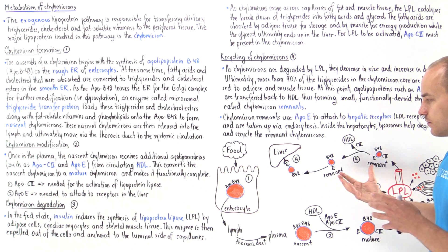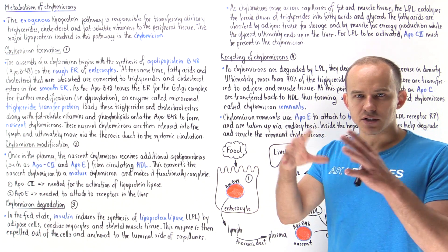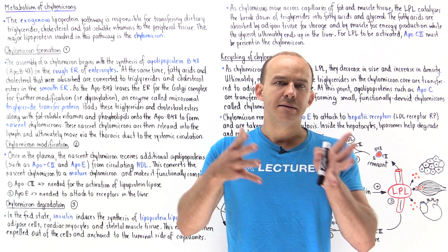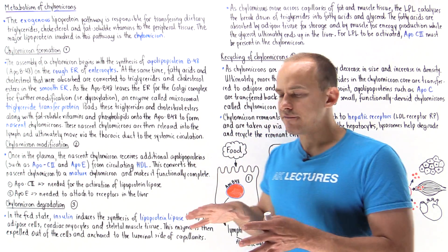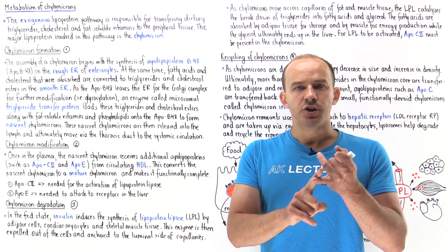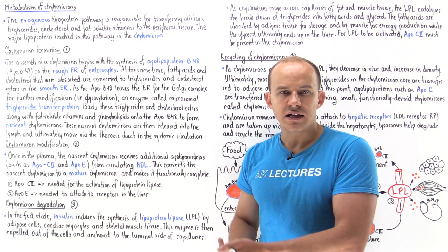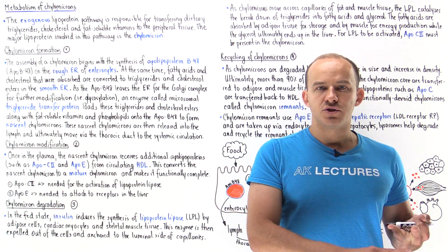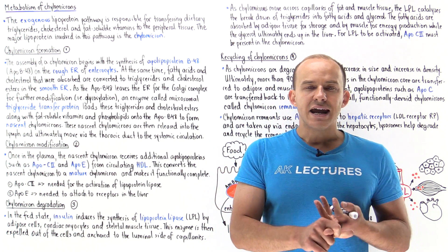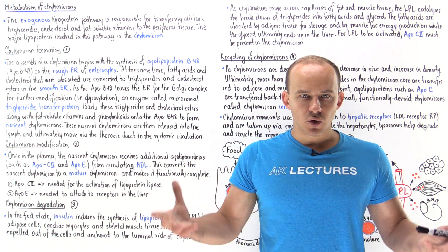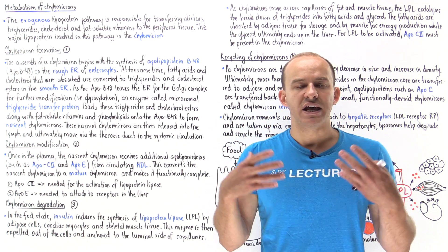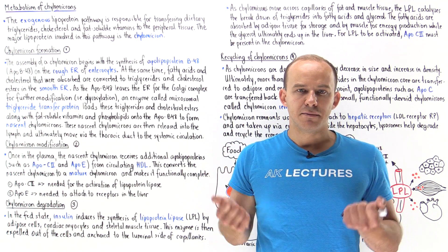Once in the liver, the remnant chylomicrons associate with lysosomes, and the enzymes in the lysosomes digest and break down everything within those chylomicrons. We convert cholesterol esters back to cholesterol. We break down the triglycerides back to fatty acids and glycerol. We can break down the apolipoproteins into amino acids. All of these can be reused and recycled by the liver and by the body.